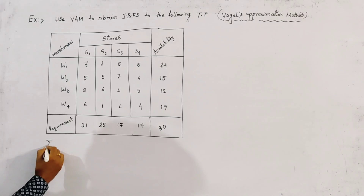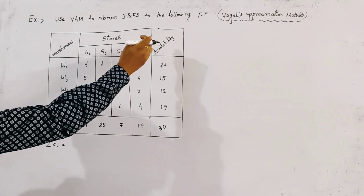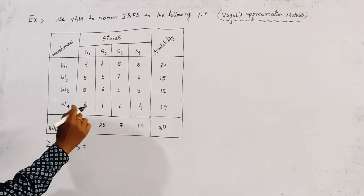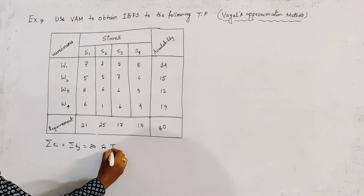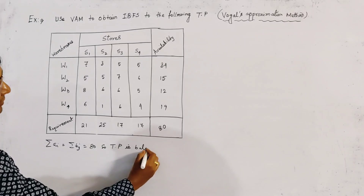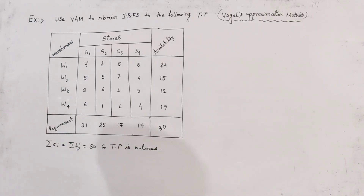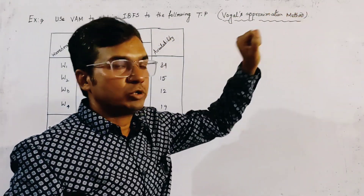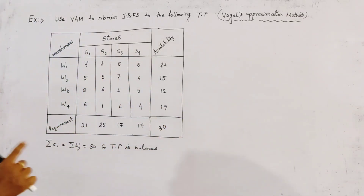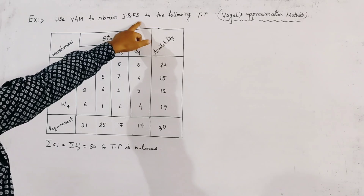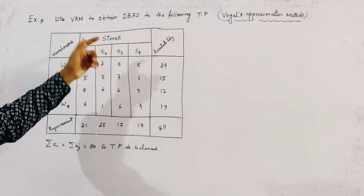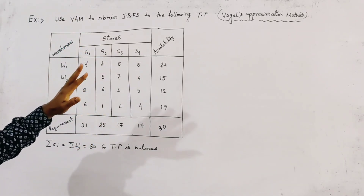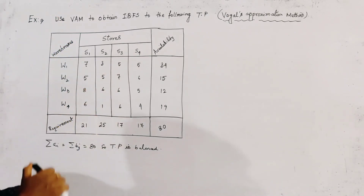We first write summation Ai — the summation of availability — which is equal to summation Bj, the summation of requirement. This is given as 80, so the transportation problem is balanced. Here we use the method VAM, that is Vogel's Approximation Method. We are going to find out the initial basic feasible solution of this transportation problem using VAM. To use this method, we first draw a transportation table from the given problem.